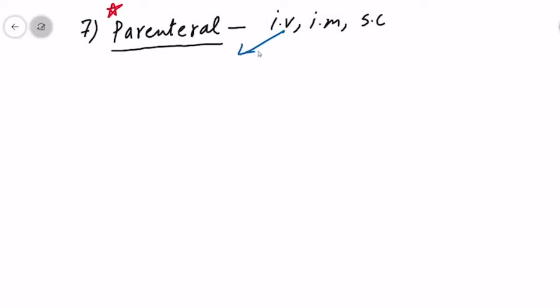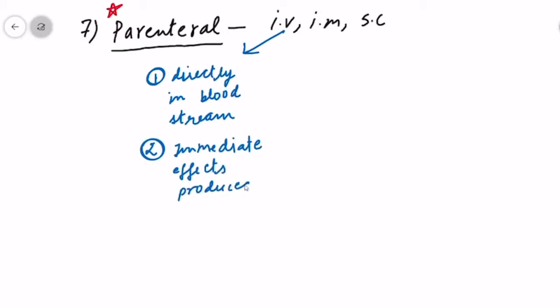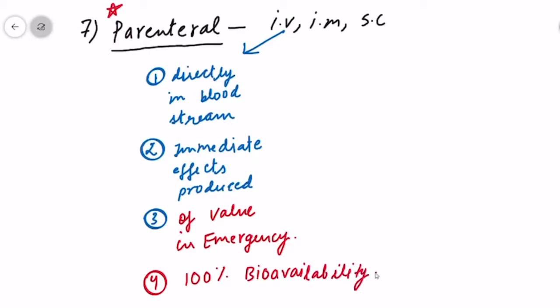Now we come back to the routes. First, the intravenous route. In this route, the drug is directly injected into a superficial vein. That means the drug reaches directly into the bloodstream and shows immediate effects. Because of this, we need very little quantity of the drug because it's reaching directly into the blood and showing its action.